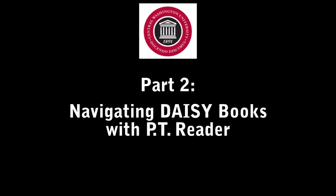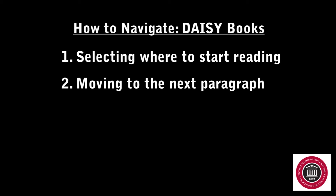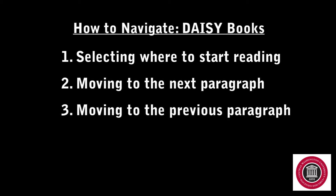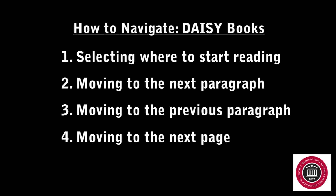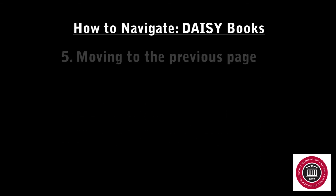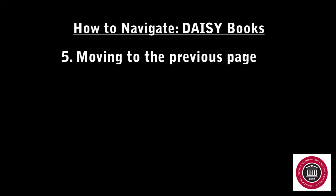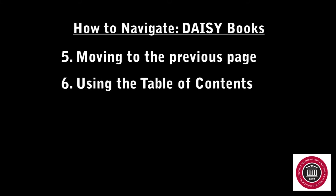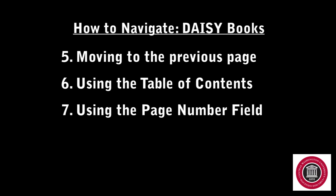Now let's look at how to navigate within a DAISY Book. Here are the functions we will be learning how to use: 1. Selecting where PT Reader should start reading. 2. Move to the next paragraph. 3. Moving to the previous paragraph. 4. Move to the next page. 5. Moving to the previous page. 6. Using the Table of Contents functions. 7. Using the Page Number field to go to a specific page.